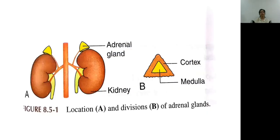This diagram shows the left side with the kidney, and there is a small yellow gland present on the kidney — we call it the adrenal gland. The right side of the diagram shows that in the center is the medulla and the outside is the cortex. Remember that the cortex is outside and the medulla is inside.